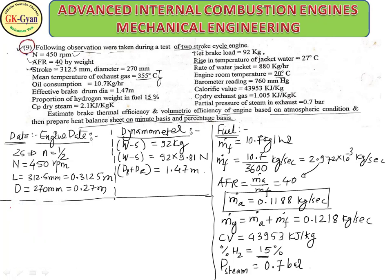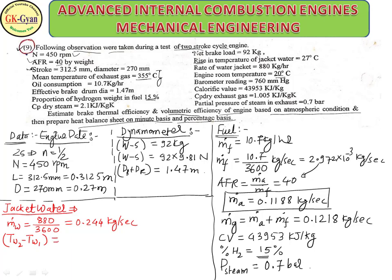Jacket water data: mass flow rate of water m_w = 880 kg/hr = 880/3600 = 0.244 kg/s. Rise in temperature of jacket water (Tw2 − Tw1) = 45°C. Specific heat of water Cpw = 4.186 kJ/kg·K.